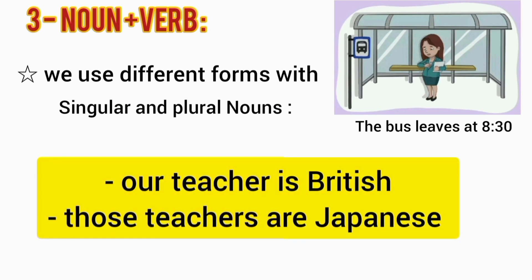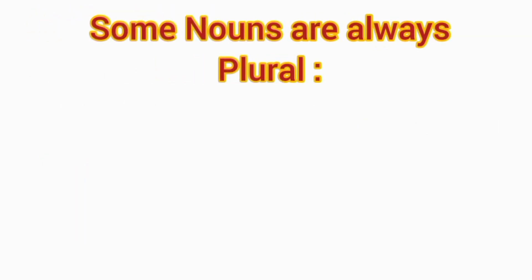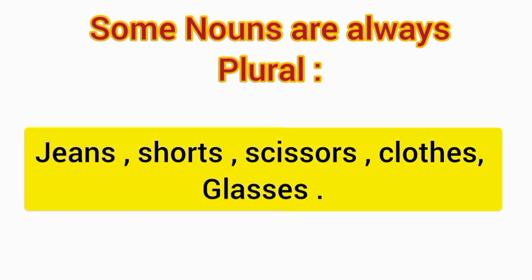For example, our teacher is British. Those teachers are Japanese. Some nouns are always plural: jeans, shorts, scissors, clothes, glasses.